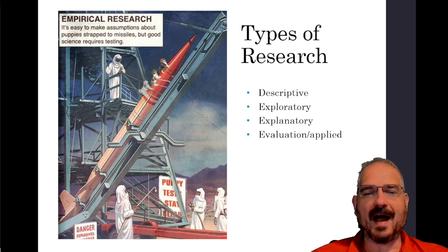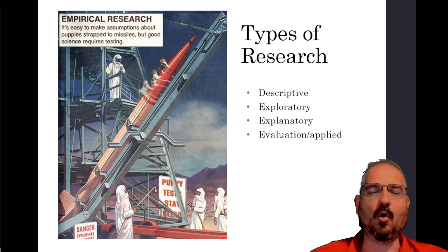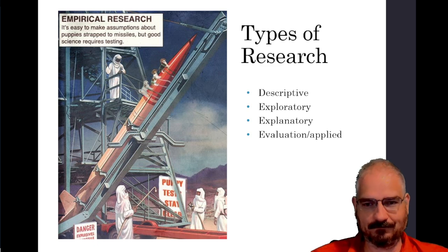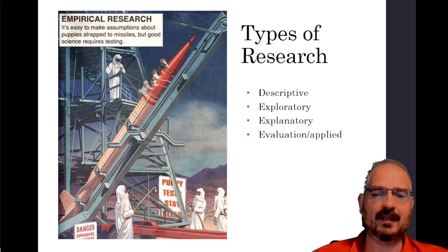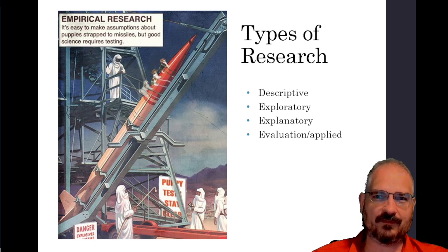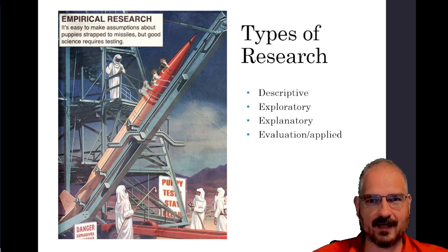You can divide research into many different kinds of categories. One way is by the goals of the research. Many textbooks divide this into three, but I learned to divide it into four. The first three — descriptive, exploratory, and explanatory — are the big three that everybody agrees on. Descriptive research is, as the name suggests, describing the world. For example, how much crime is happening in the United States — that's descriptive research.